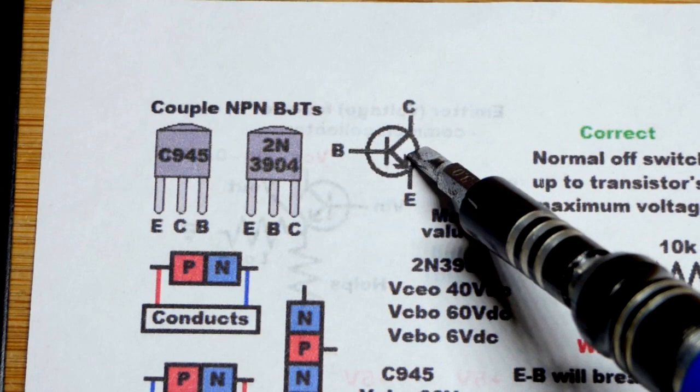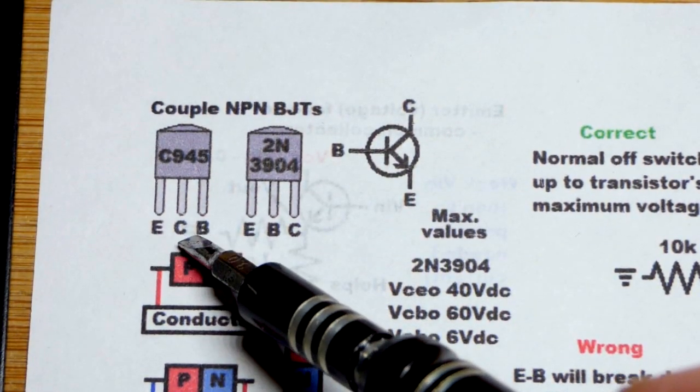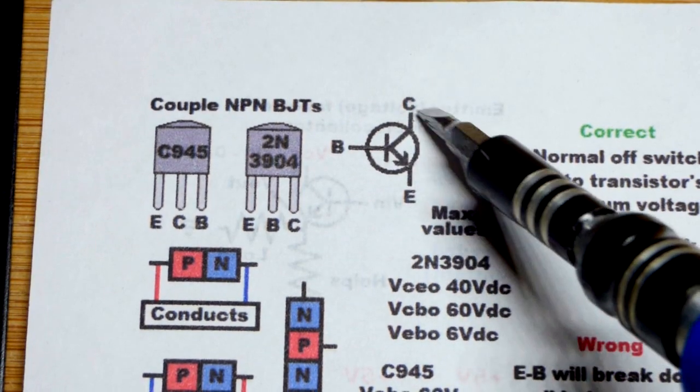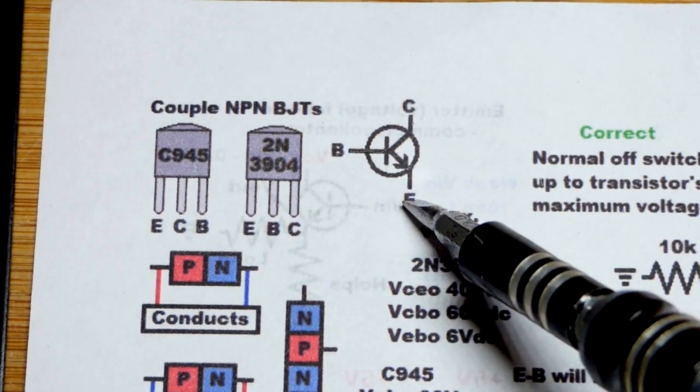So you have to take this schematic symbol and attach the components to the right terminal based on the schematic symbol there. It probably won't say C, B, or E on it. You already got to know it.